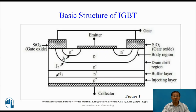This is the basic structure of IGBT. It has different layers: the first bottom layer is the P-plus region, which is the injecting layer. The second layer is the N-plus buffer layer; these two form junction J1. The third is the N-minus layer — the drain drift layer. The fourth is the P-region body region, and the last is the N-plus region. The body region and N-plus region form junction J3, while the drain drift region and body region form junction J2, giving three junctions in total.